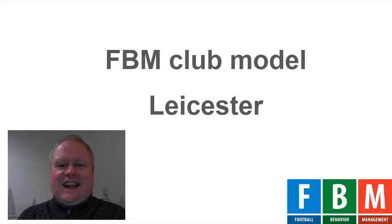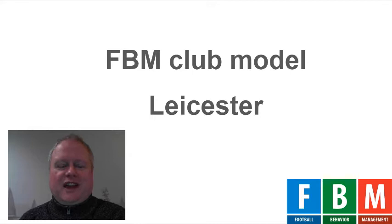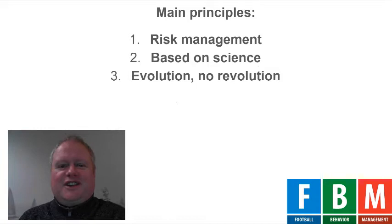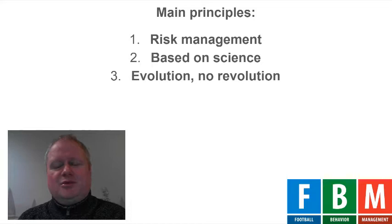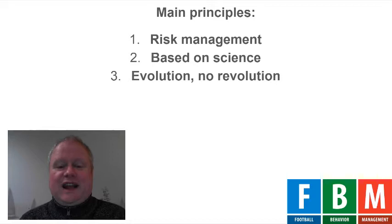An important part of system thinking is to actually have a model of your own organization — in terms of football clubs, a model of your own football club. The FBM club model is primarily a model of how your club is running. There are three main principles we use for the club model. The first is about risk management. Running a club is quite difficult because normally risks are quite well known and limited, and there are a lot of ways to counter them. But in football, so much depends on how the first team is performing, and that means the 11 players on the pitch.